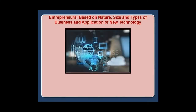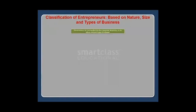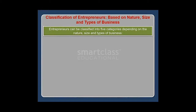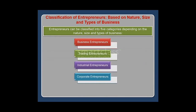In this module, you will learn about the classification of entrepreneurs based on nature, size, and types of business, as well as the application of new technology. Entrepreneurs can be classified into five categories depending on the nature, size, and types of business: business entrepreneurs, trading entrepreneurs, industrial entrepreneurs, corporate entrepreneurs, and agricultural entrepreneurs.